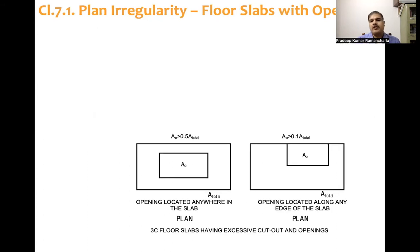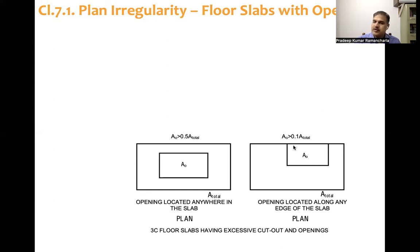Looking at the diagram: A is the total area and A0 is the area of the cutout. If the area of the cutout is more than 50 percent of the total area, or if the cutout is at the edge and has an area more than 10 percent of the total area, in both these cases we need to assume the slab will behave in a flexible manner.